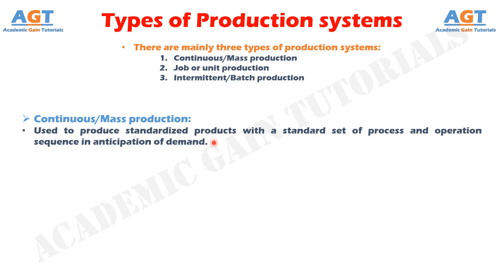This ensures a very high rate of production as we need not intervene once the production has begun. The system is appropriate in plants where a large volume of small variety of output is produced — for example, oil refineries, cement manufacturing, and sugar factories.